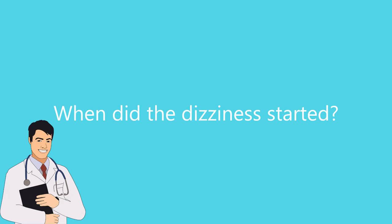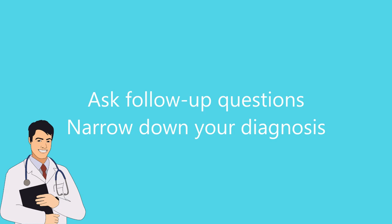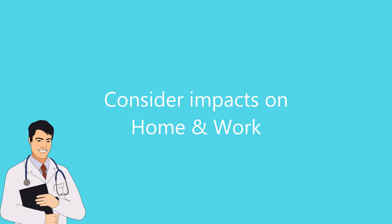Ask the patient when it all started from the beginning — the first episode. Take them back to that episode, and this will help you to pick up on cues that the patient may reveal when they're telling their story. Once the patient has told their story, then you can ask specific questions to narrow down your diagnosis. Dizziness can be a very debilitating problem for patients, with impact to their life and their work. So it's important to elicit the social aspect of the history and whether this is causing any interference with their life.